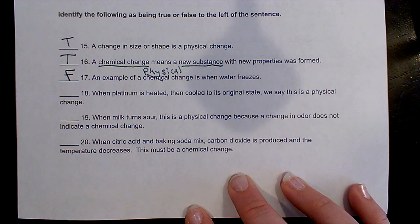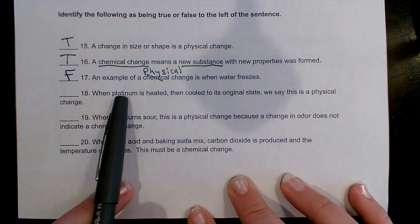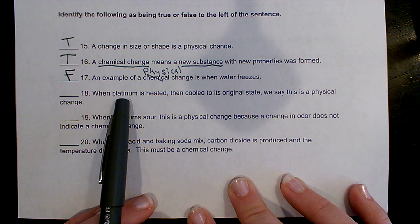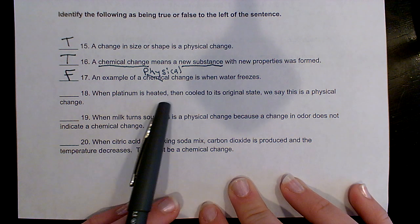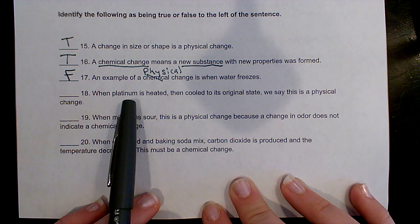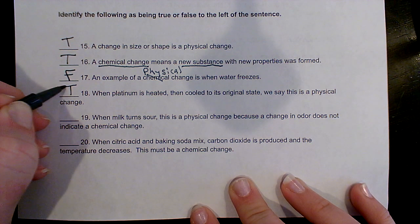When platinum is heated then cooled to its original state, we say this is a physical change. Platinum is a metal — we could heat it up, melt it, cool it, and turn it back into a solid again, but it would stay platinum, it would stay the same substance. So that's true.